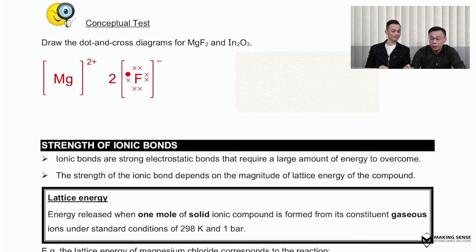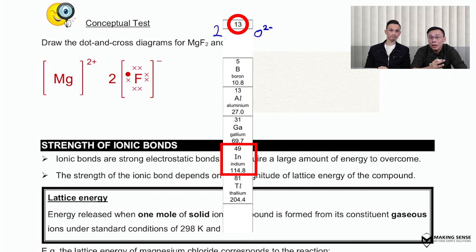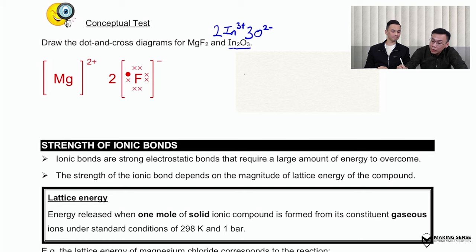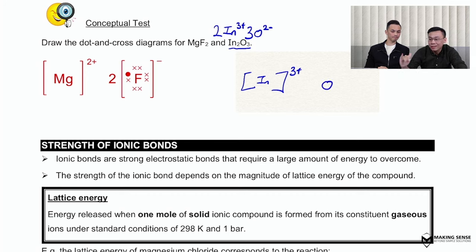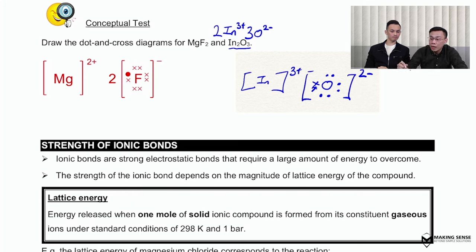Welcome back! The magnesium fluoride example is straightforward — check your answer against the diagram. For indium oxide, start by writing down the ions: indium has a charge of 3+ and oxide has a charge of 2−. Based on the formula, each formula unit contains two indium ions and three oxide ions. Indium is a Group 13 element with three valence electrons; after losing them it forms In³⁺ in a square bracket. Oxygen is Group 16 with six valence electrons — it gains two more from indium to achieve stable noble gas configuration with a 2− charge. Finally, add the coefficients: two indium ions and three oxide ions.